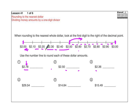Here's the first one: two dollars and seventy-eight cents. Two seventy-eight would be about right here — here's two seventy, here's two eighty, two seventy-five would be right about in the middle, and two seventy-eight is right about in there. We can see that we're closer to three dollars than to two dollars, so this rounds to three dollars.